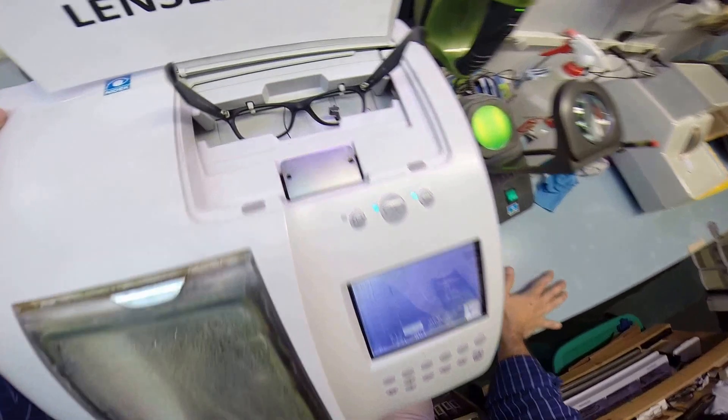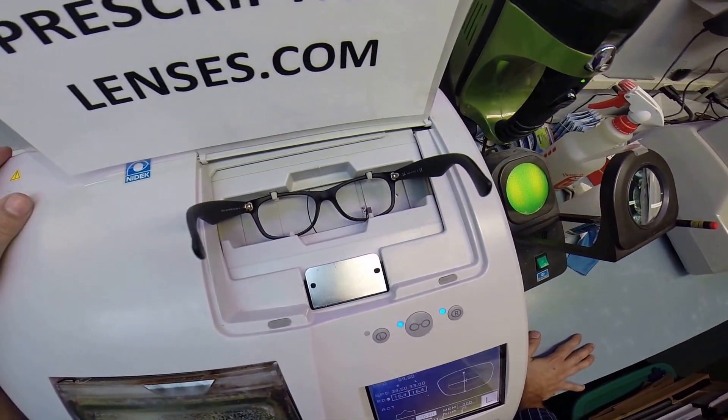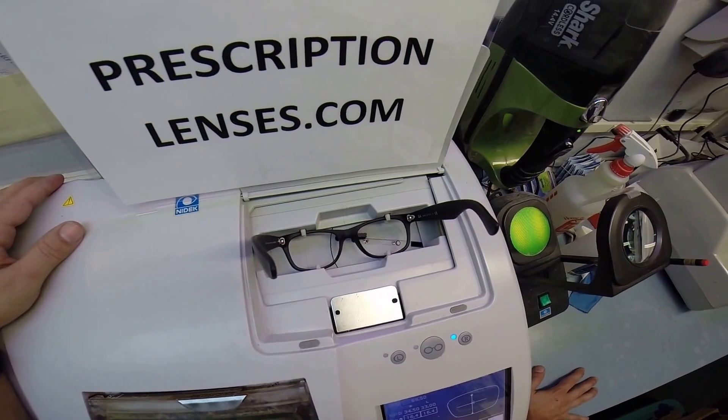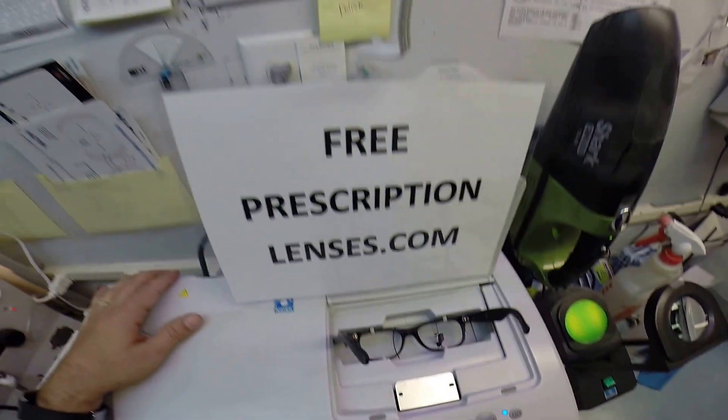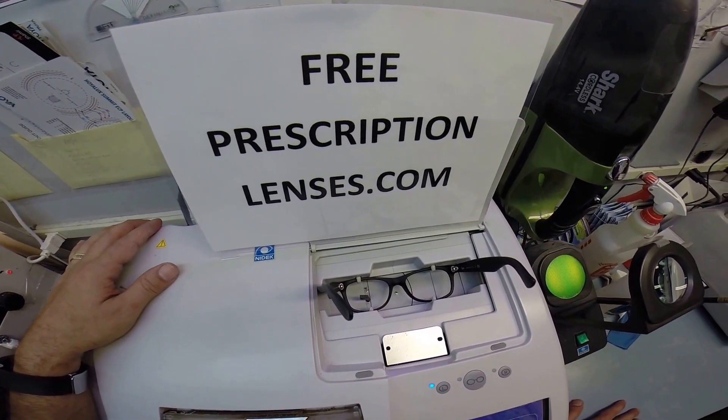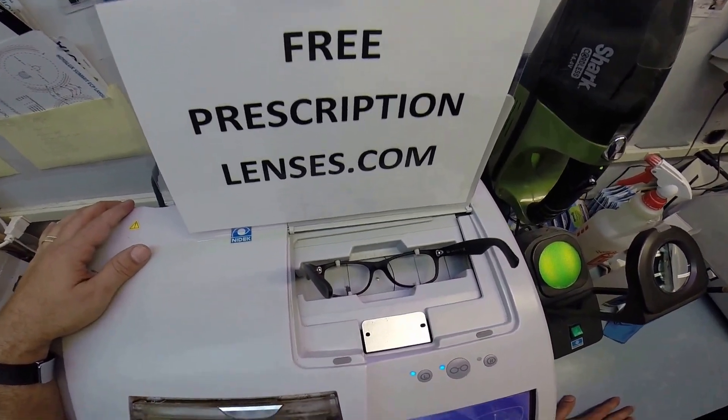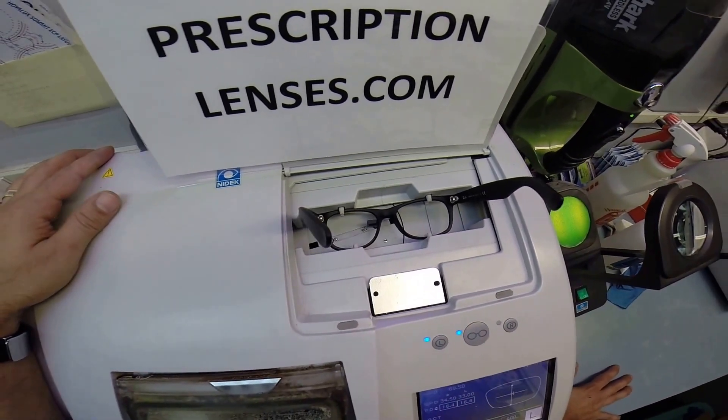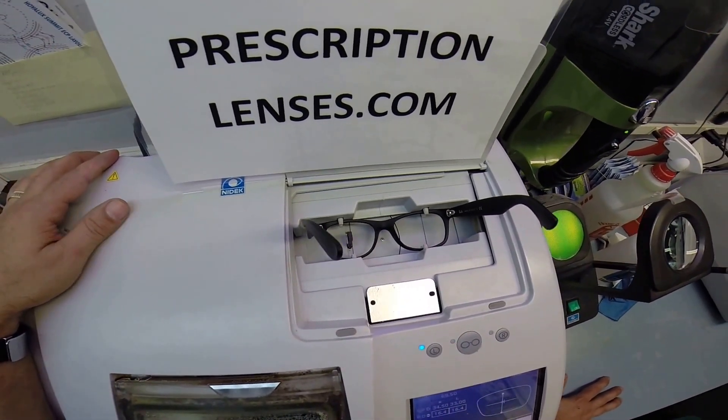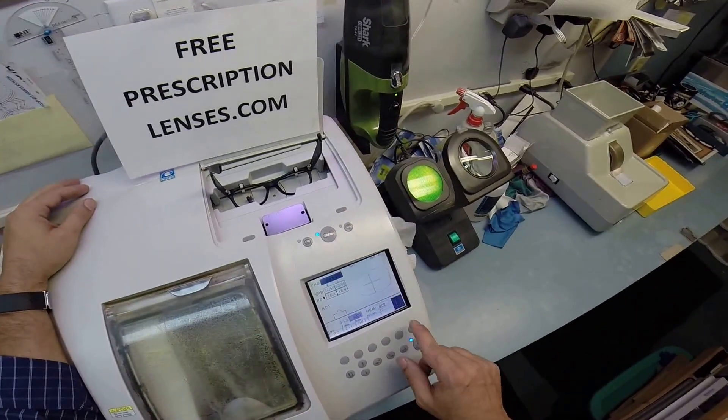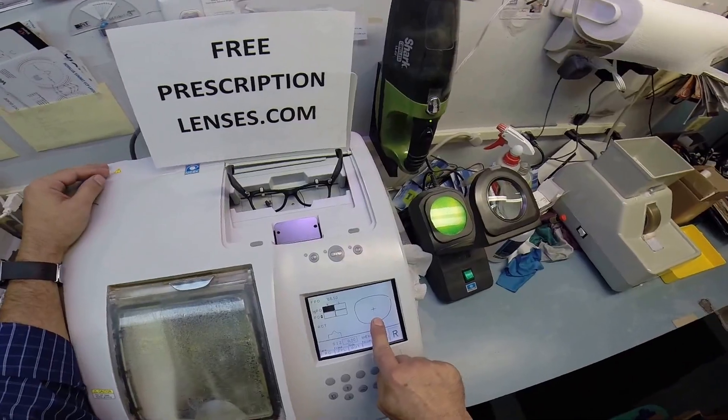The stylus is coming up and tracing the shape of the right lens, then it's going to move over and trace the shape of the left. Here at freeprescriptionlenses.com, where everyone loves a bargain and no one is disappointed with quality. You buy a genuine authentic Ray-Ban frame or any frame for that matter, and you receive free single vision prescription lenses.